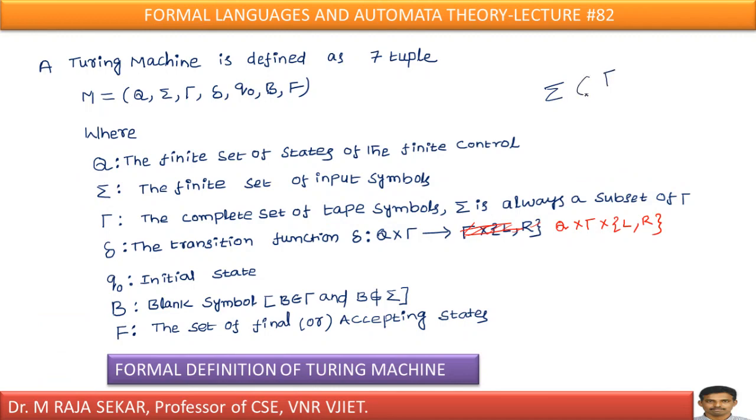Delta is a transition function. Q naught on tau, you will go to, again you will go to Q, sorry, Q, capital Q, means set of states on state, you are giving tape symbol, again you will go to some state and some tape symbol. Either you will move left direction or you can move right direction, that's what it says.